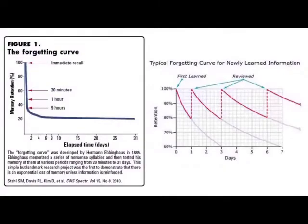Once we stop thinking about something, it fades quickly — exponentially. There's a famous study by Hermann Ebbinghaus from the 1800s, replicated many times, showing that memory has an exponential decay if you only learn something once. But as long as we periodically revisit the same material, we can spike our recollection back up, and each time it goes back down it settles at a higher baseline — so we'll virtually never forget something after going over it enough times.